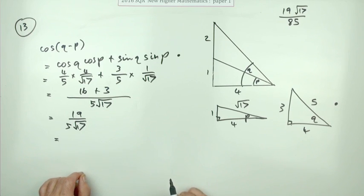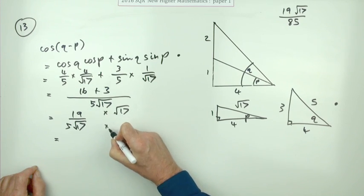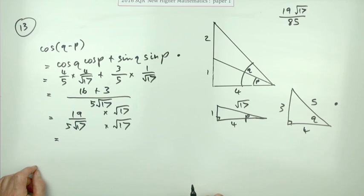So put in the working, which would be multiply the top and the bottom by √17. And I've missed out some of the extra marks in between.